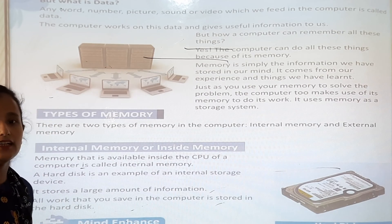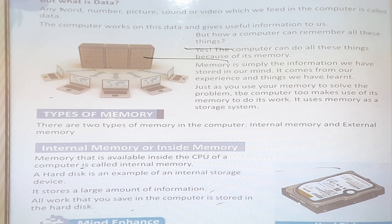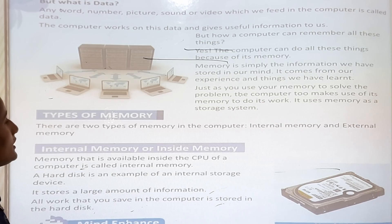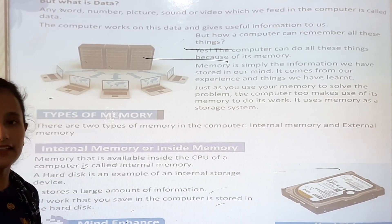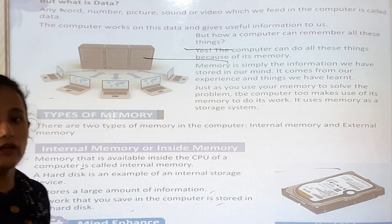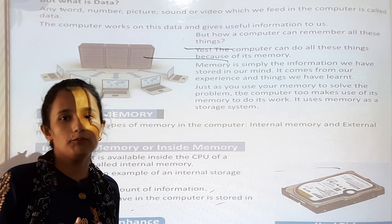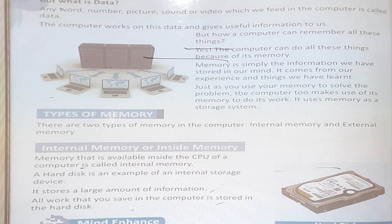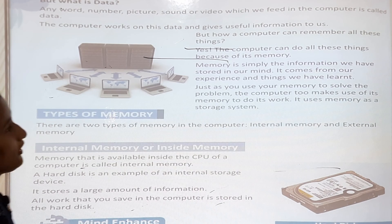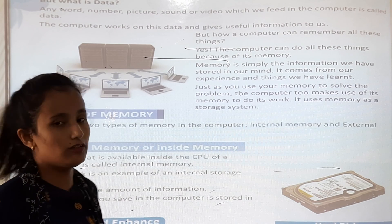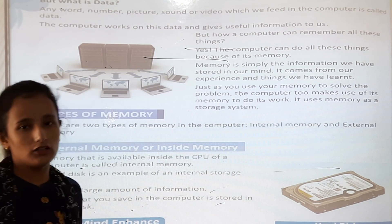These are the types of data that a computer can store. Data means when you save words, numbers, pictures, movies, etc. into a computer — these are called data. The computer works on this data and gives us useful information. With the help of data, the computer works.